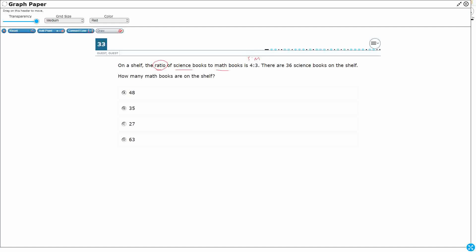So it's going to be 4 science to 3 math, because that's the order in which they gave you the words. So we've got 36 science books. How many math books are there?